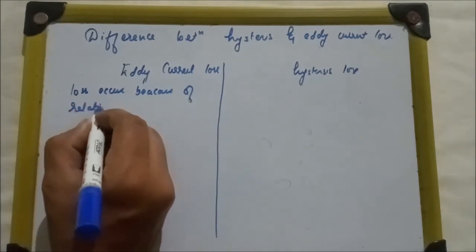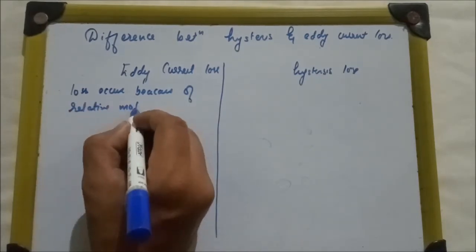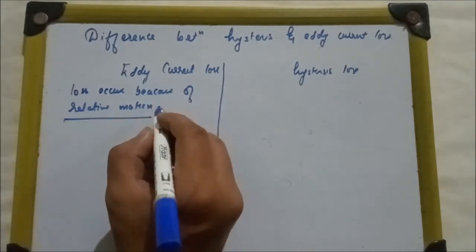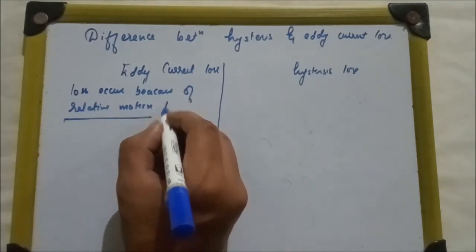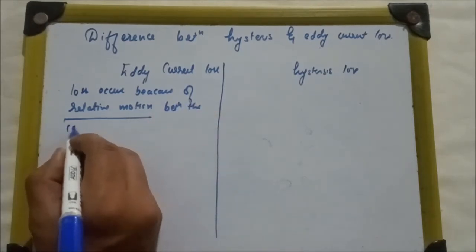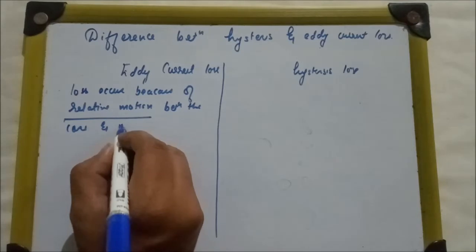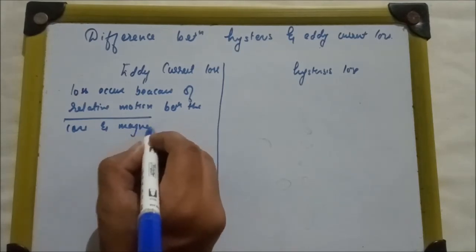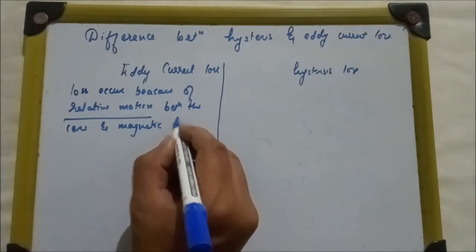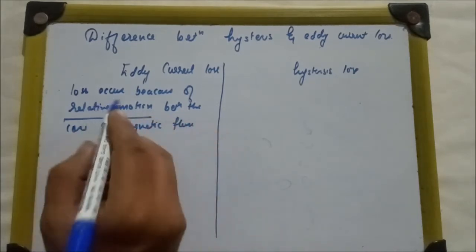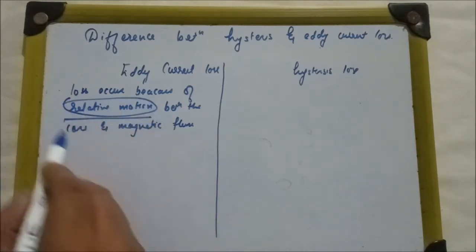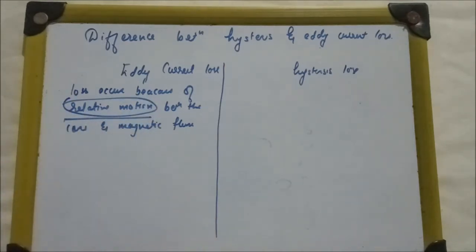This point is important. Relative motion means the relative motion between the core and magnetic flux. So, how does the eddy current loss occur? Due to relative motion between core and magnetic flux.